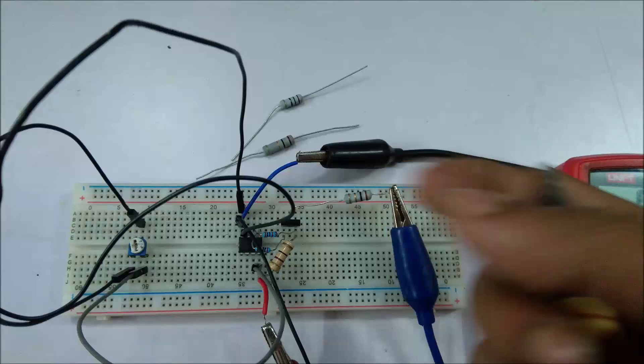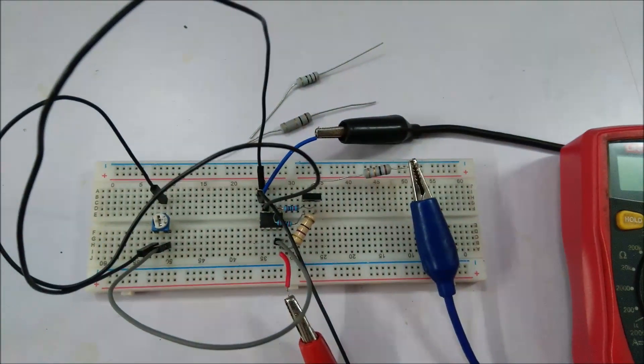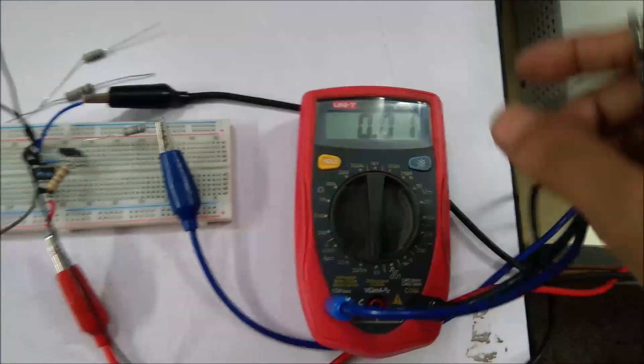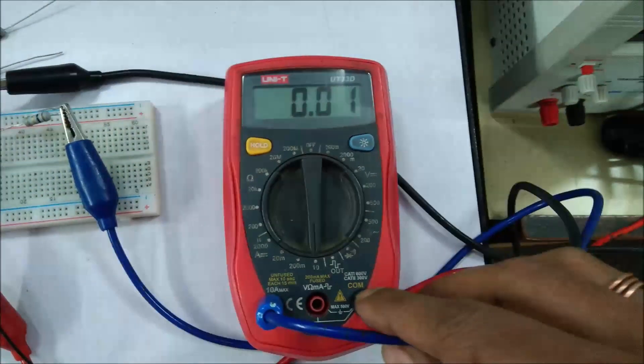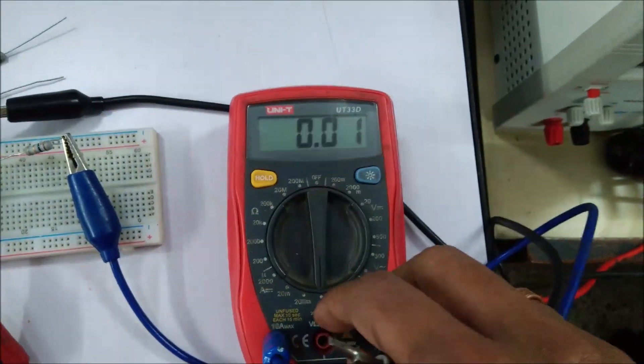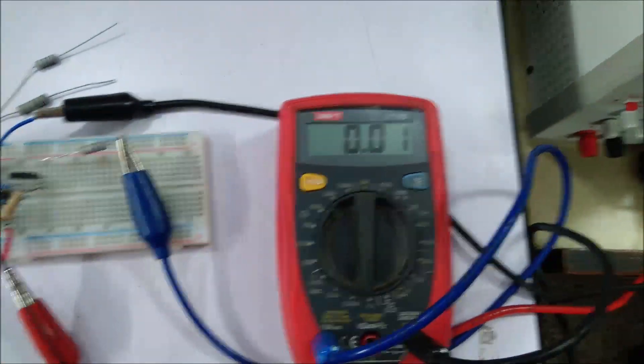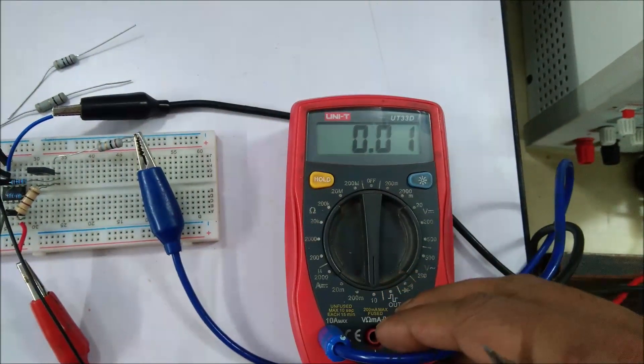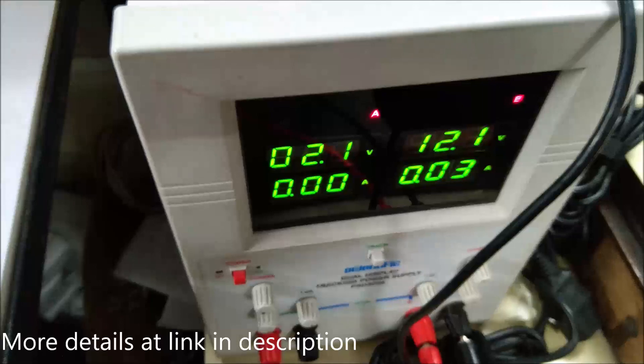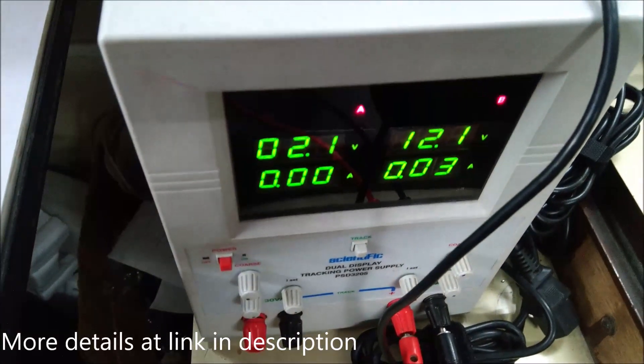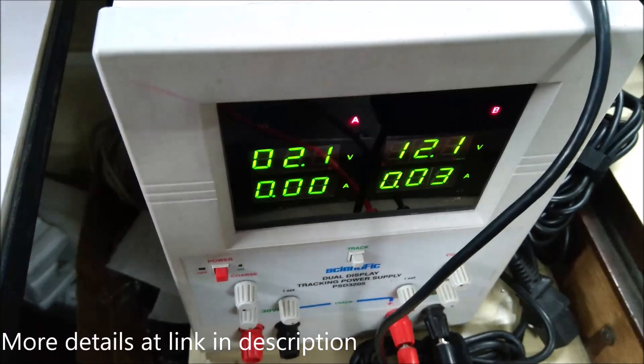So here is my multimeter which is connected in low ampere mode, so it will check how much current is flowing through the load. My circuit is powered using a bench power supply which is providing 12.1 volts.